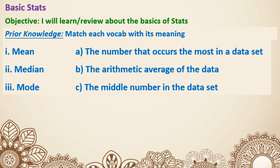Now let's go over some of the vocab that you may have learned before: mean, median, and mode. Mean, in other words average, is the average of the data — we typically add all the numbers together, then divide by how many numbers we have in total. Median is typically the number in the middle of the data, and mode is the number that appeared the most in the dataset.